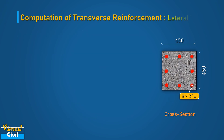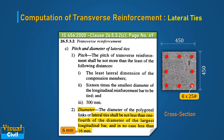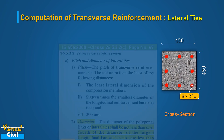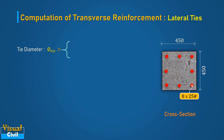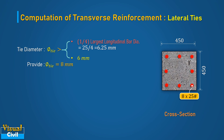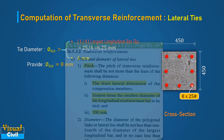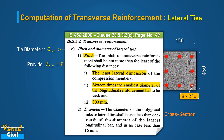In the next step, let us compute the diameter and spacing of the lateral ties. As per clause 26.5.3.2, the diameter of the lateral ties shall not be less than one-fourth of the diameter of the largest longitudinal bar, and in no case less than 6 mm. Here, 25 mm bar diameter is used for longitudinal steel. Hence, the one-fourth value of the diameter is 6.25 mm. Therefore, use 8 mm diameter lateral ties. The spacing of the ties shall not be more than the least of the following: first, the least lateral dimension;